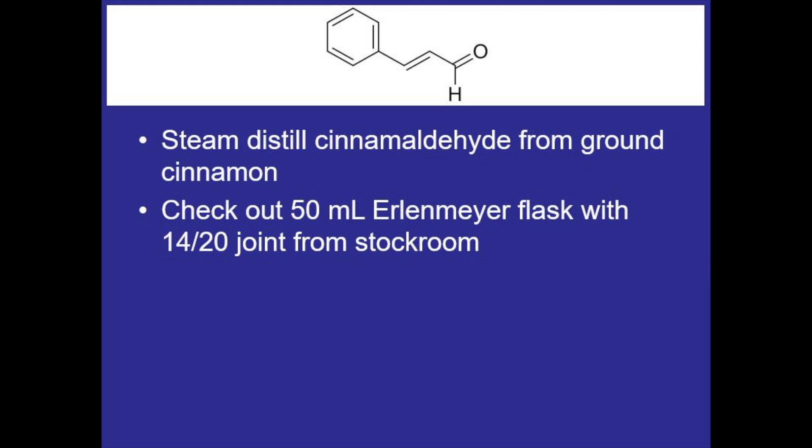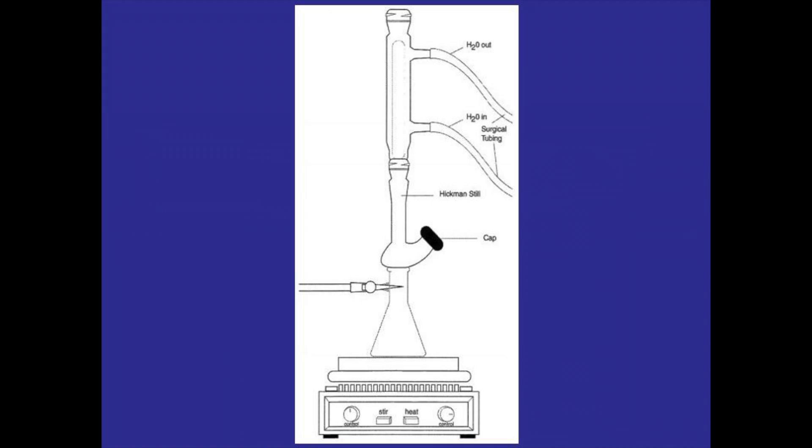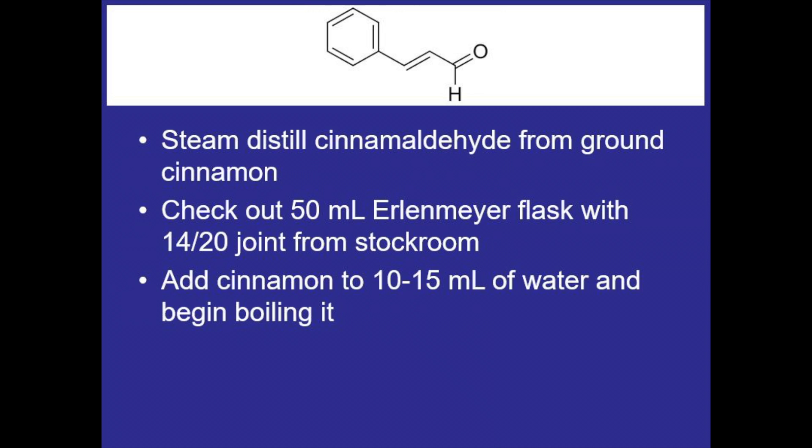In our experiment we will be checking out a 50 milliliter Erlenmeyer flask with a specific joint that can attach to the Hickman still from the stockroom. Then we'll add the ground cinnamon to about 10 to 15 milliliters of water and begin boiling it. We'll also be using Triton X-45 as a surfactant since it lowers the surface tension, helping the water boil not as violently so that we don't get cinnamon up into the Hickman still.